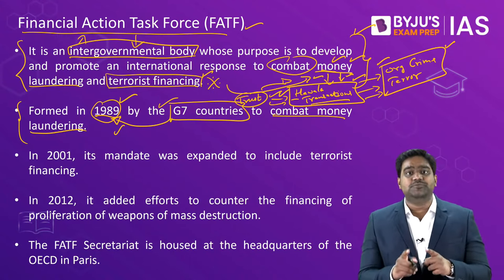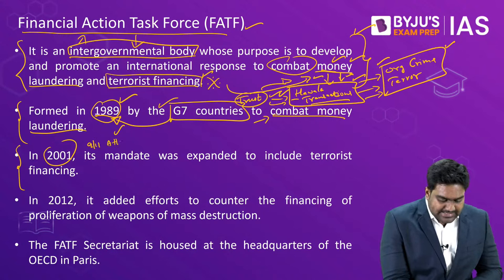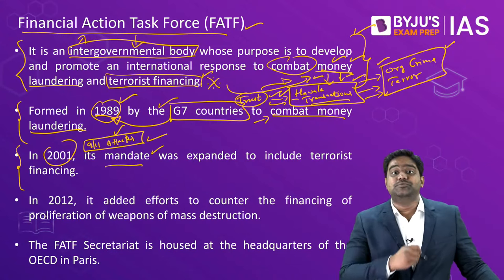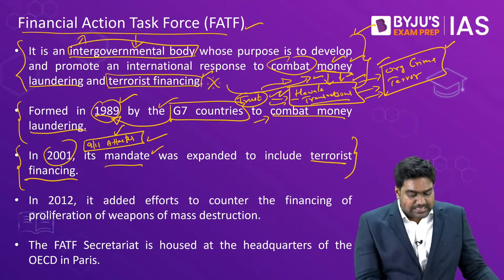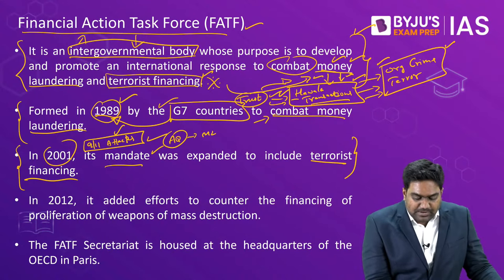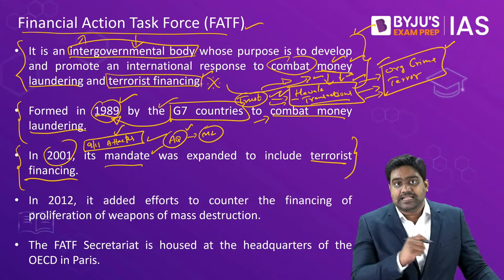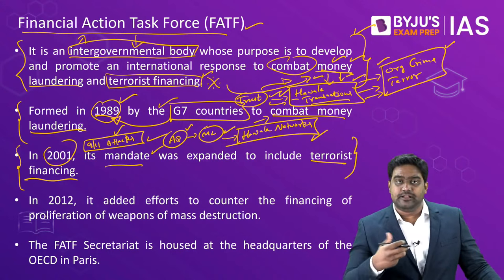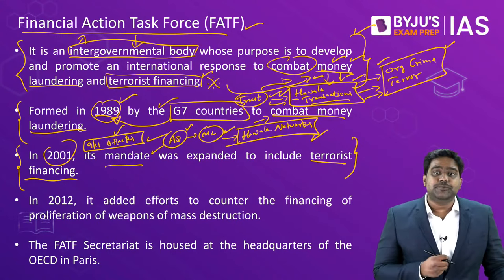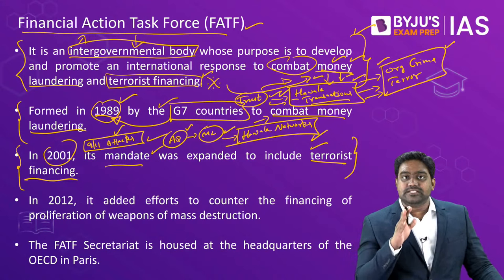Later in 2001, after the 9/11 attacks happened in the United States, the FATF was given a second objective: to counter terrorist financing. The 9/11 attacks carried out by Al-Qaeda involved aspects of money laundering — the terrorists who executed the attacks had received funds and finances through money laundering channels such as Hawala networks. This clearly established the link between money laundering and terror financing. Following the 9/11 attacks, FATF's mandate was updated and it was given the second objective of targeting terrorist financing as well.